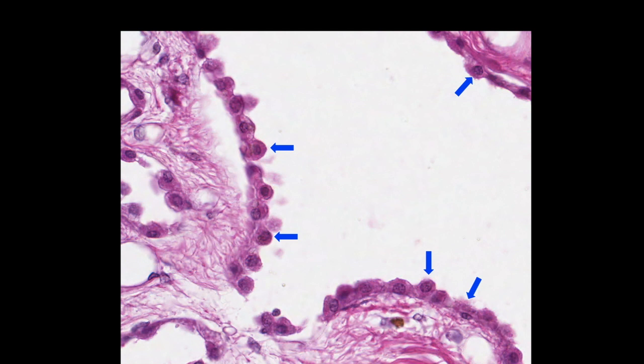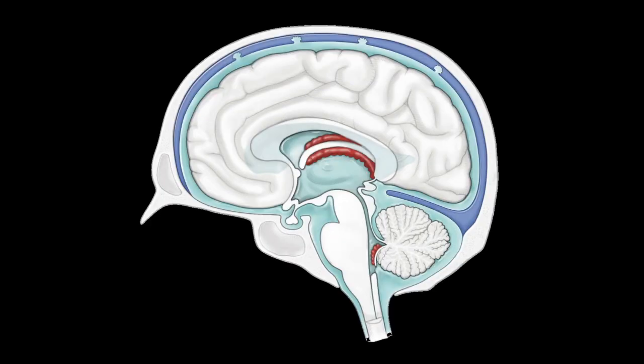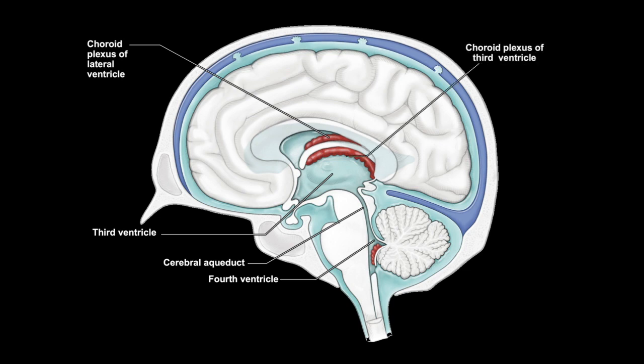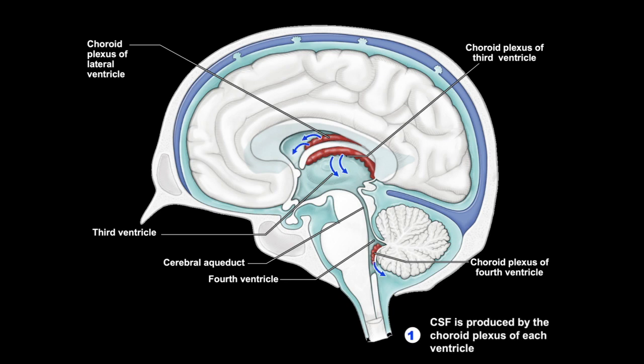So once CSF is made, how does it actually flow in the brain? Here's a sagittal section of the brain again, and I've labeled the ventricles here, the lateral, third, the cerebral aqueduct, and the fourth. Next, you can see the location of the choroid plexus at the lateral, third, and fourth ventricles. It's kind of in that salmon color. What we're going to do now is walk through the steps of CSF flow one by one. So step one, CSF is produced by the choroid plexus of each ventricle.